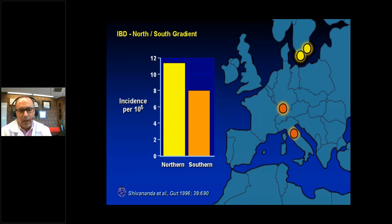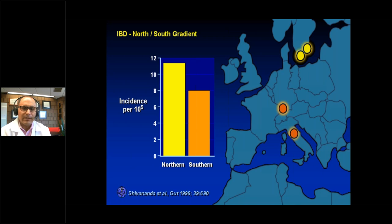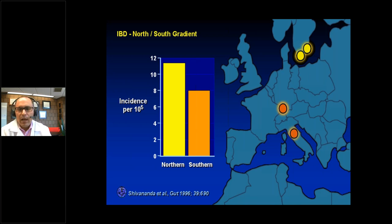Within North America and Europe, there is a north-south gradient — Crohn's and colitis is more common in northern climates than in southern climates. We don't know exactly why that is. It may have to do with sunlight and vitamin D deficiency, or it could be due to higher rates of infections in warmer climates, which may suppress the autoimmune process.